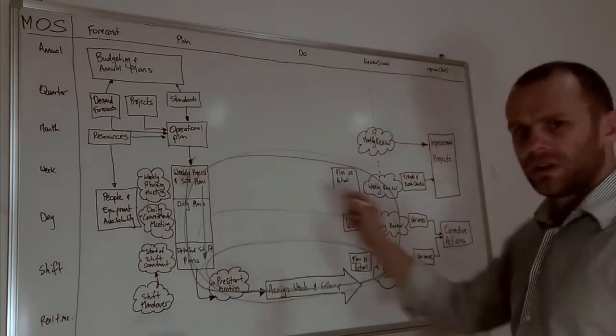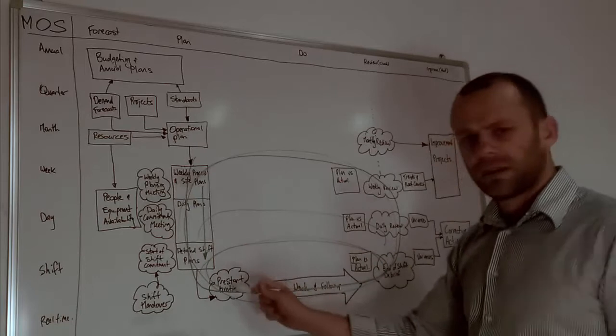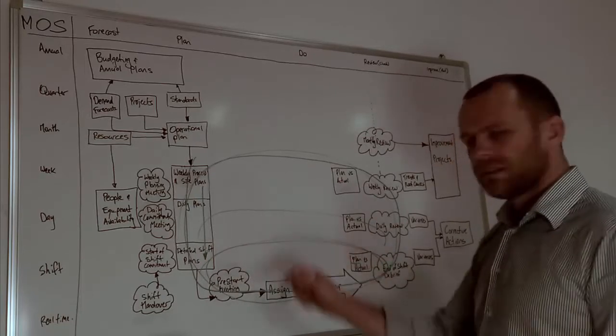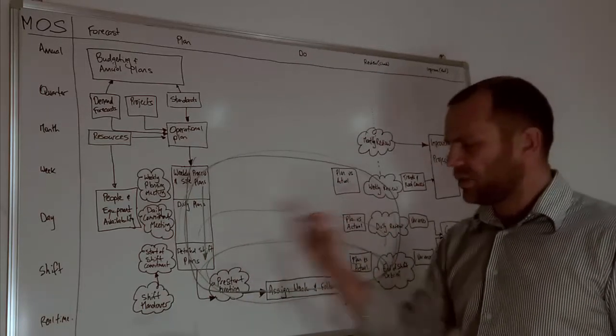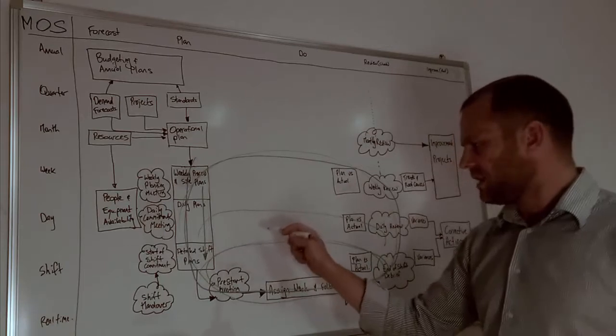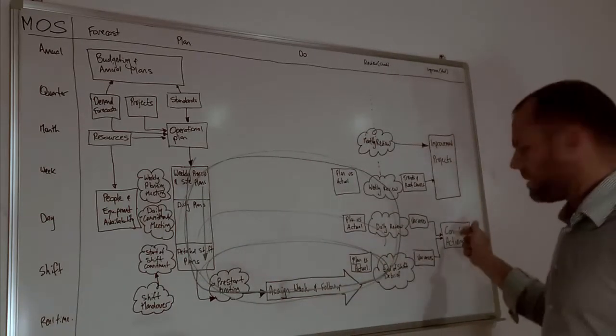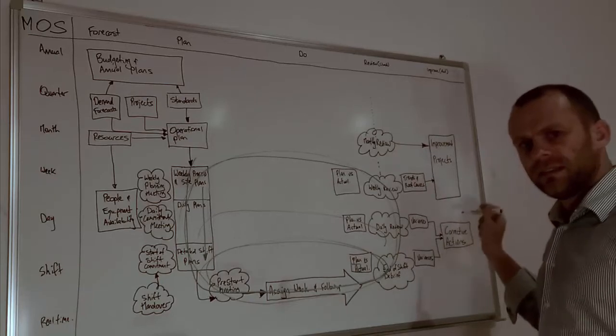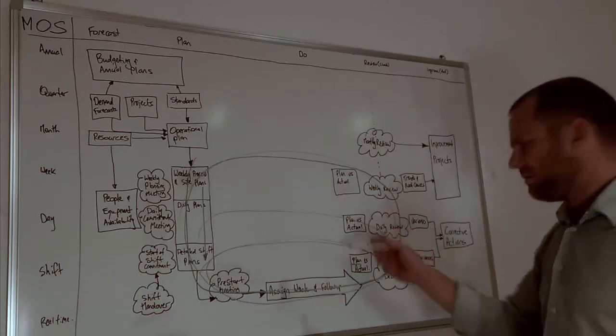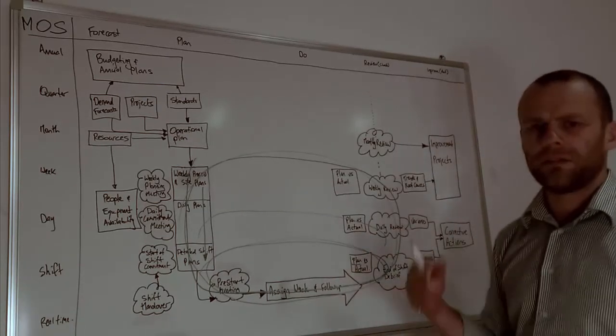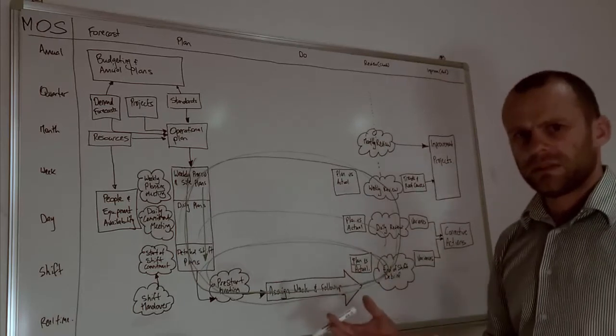And so you have these cycles of plan, do, check, act going round and round and round that continuously put a good plan in the hand of supervisors, see how it's going, identify variances, talk about improving and correcting issues so you get rid of root causes of problems and you continuously improve the business.